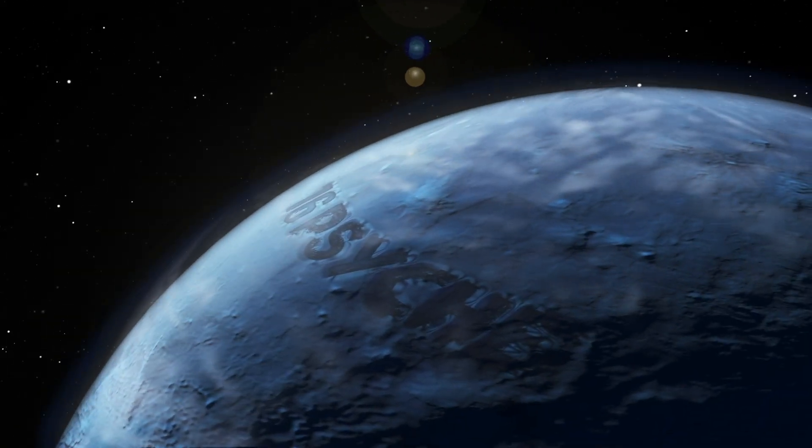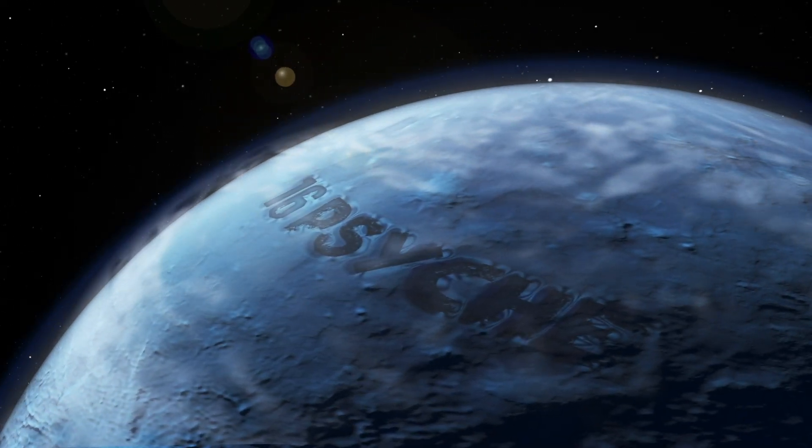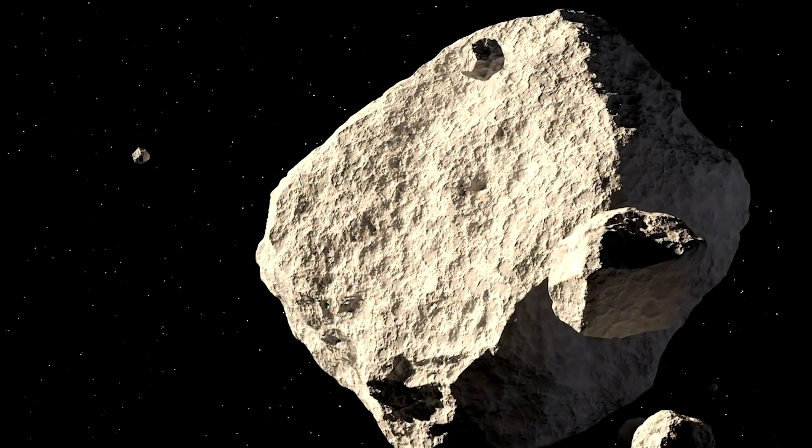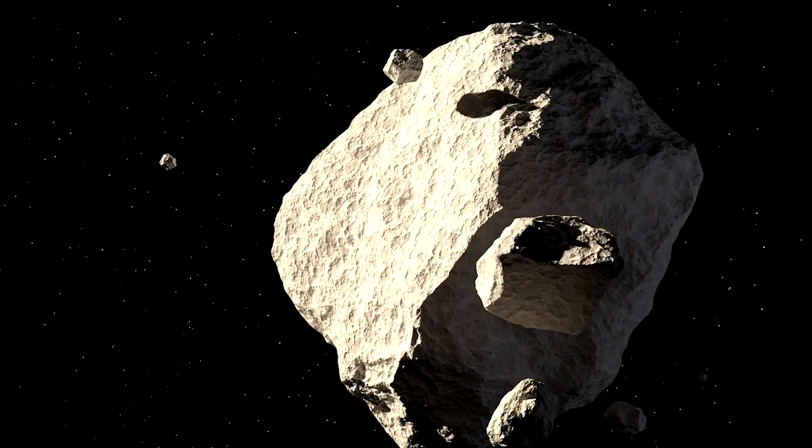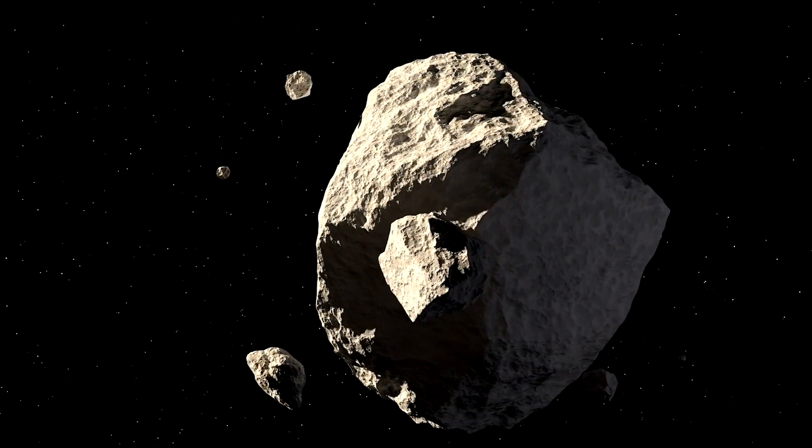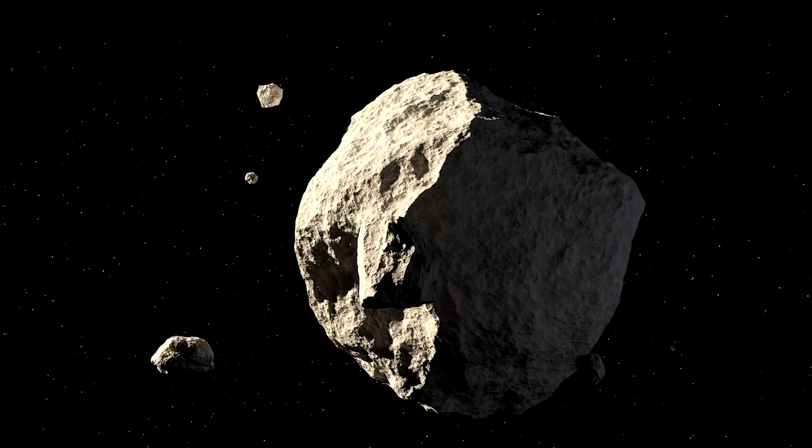16 Psyche. 16 Psyche isn't your typical space rock. This metal asteroid is believed to be made entirely of iron and nickel, similar to the Earth's core. It is also one of the biggest objects in the main asteroid belt, orbiting between Mars and Jupiter.